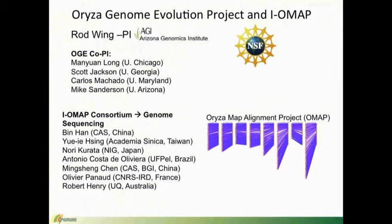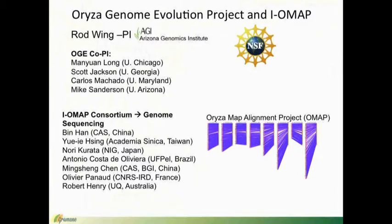The majority of the data I'm going to be talking about today came out of the Oryza Genome Evolution project and the Oryza Mapping Alignment project, an NSF-funded project. The PI was Rod Wing, and co-PIs included Manuen Long, Scott Jackson, Carlos Machado, and Mike Sanderson. We also have data from the IOMAP consortium, which included genome sequencing projects done in China, Taiwan, Japan, Brazil, France, and Australia. The datasets hosted here at Grameen are part of this broader consortium.